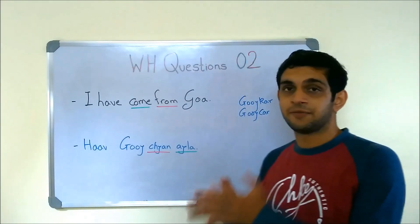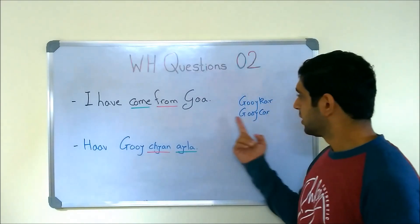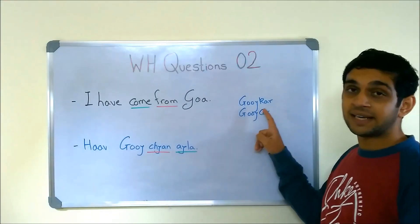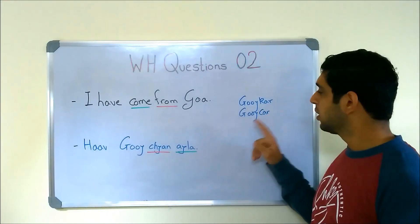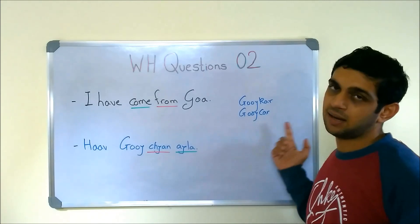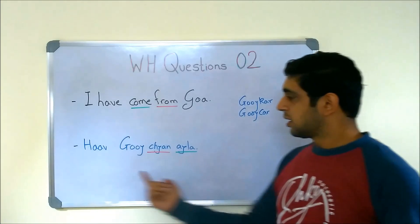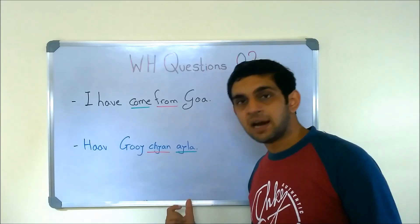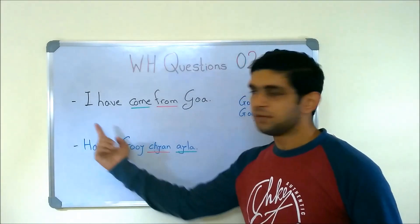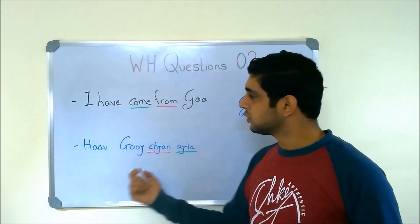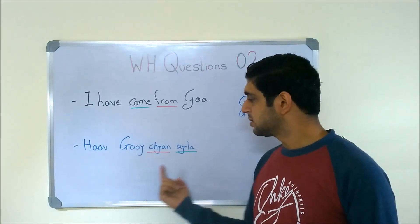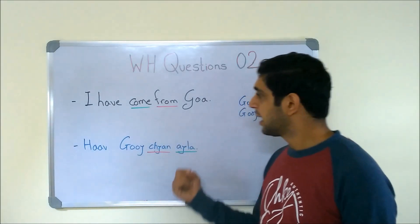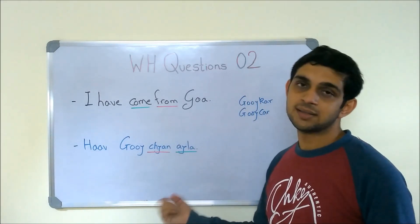A person from GOA is known as GOIKAR. The spelling would be G-O-O-I-K-A-R or G-O-Y-C-R. CAR is the suffix used. HAO GOIN CHAAN AILA — HAO is I, AILA is CAME, CHAAN is FROM, and GOA is GOIN.